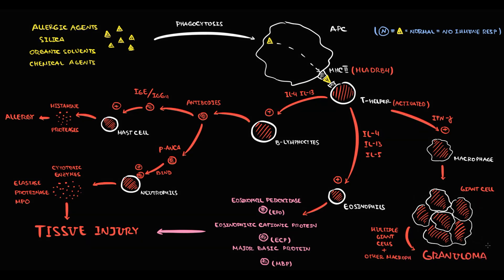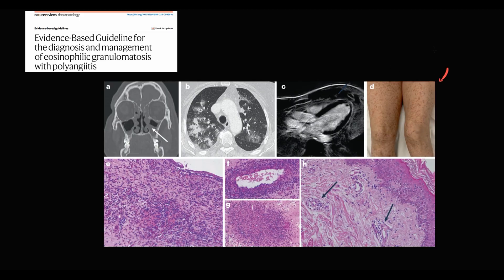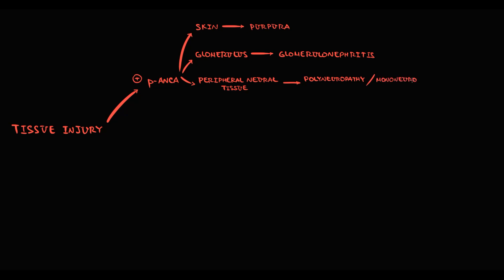Churg-Strauss vasculitis has two tissue injury patterns, separated based on the presence of P-ANCA. If P-ANCA is present, injury most commonly occurs to the skin, manifesting as purpura. The second tissue typically affected is the kidney, where the autoimmune reaction causes inflammation of the glomerulus — a condition called glomerulonephritis. The third tissue most commonly affected is peripheral neural tissue; injury causes polyneuropathy or mononeuropathy multiplex, typically affecting the peroneal, median, tibial, and ulnar nerves.